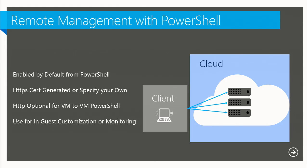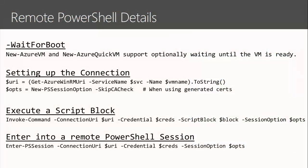A few additional capabilities: there's a 'WaitForBoot' flag on 'New-AzureVM' and 'New-AzureQuickVM'. This polls and waits for your virtual machine to fully boot, so if you want to run a script on boot, you don't have to write the looping logic yourself. Since multiple VMs are behind a single IP, they can't all listen on the same SSL port — each remote PowerShell endpoint is on a random public port. We added a commandlet called 'Get-AzureWinRMUri' that deciphers which port maps to remote PowerShell and returns the connection string.